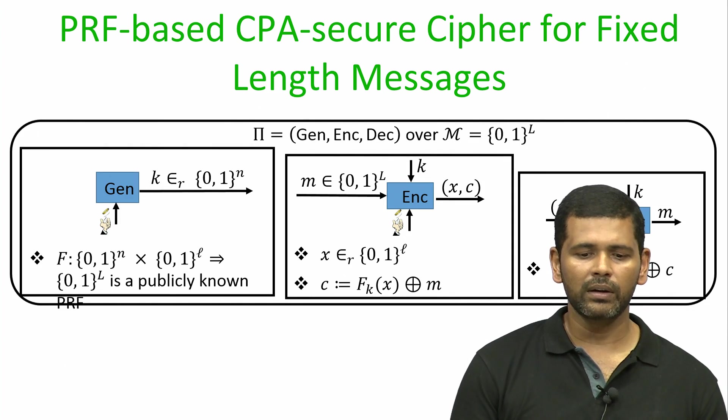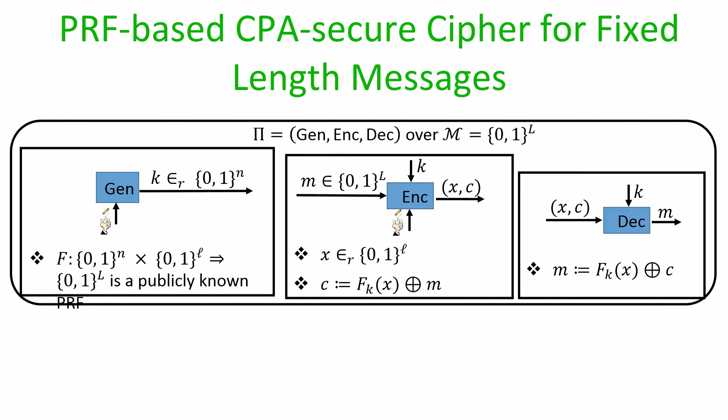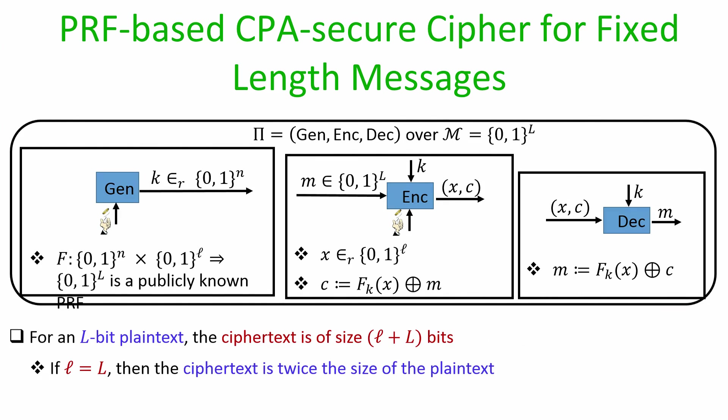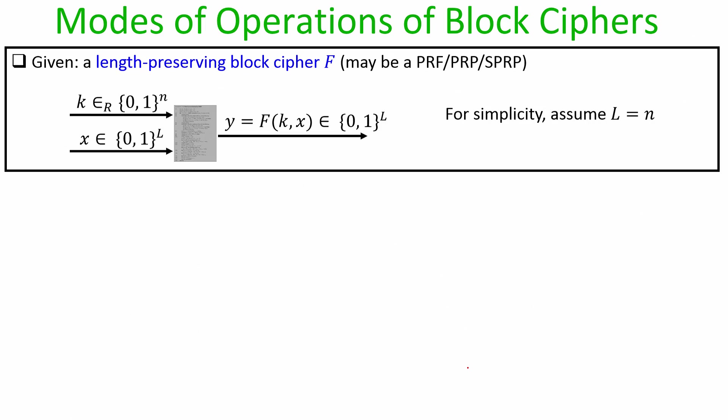To recall from the last lecture, we had seen a candidate CPA secure encryption process for encrypting big L bit messages. The two drawbacks identified in that encryption process are: first, the ciphertext size is large compared to the plaintext — specifically if big L and little l are the same, then the ciphertext is twice the size of the plaintext. Second, each encryption requires fresh randomness of little l bits.